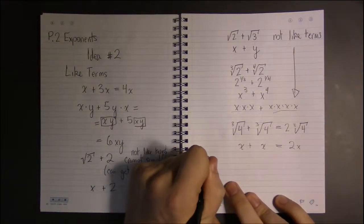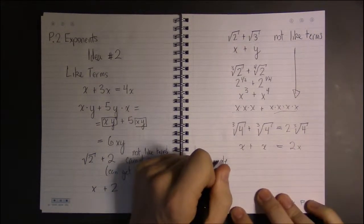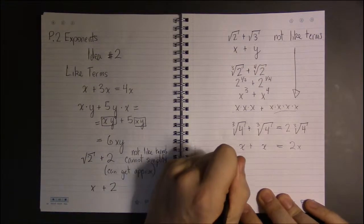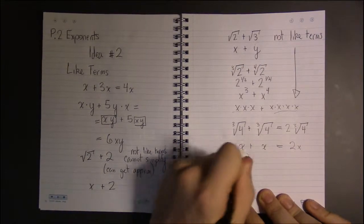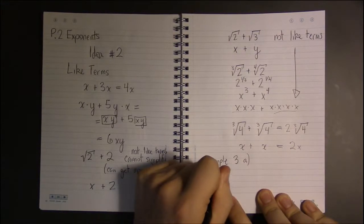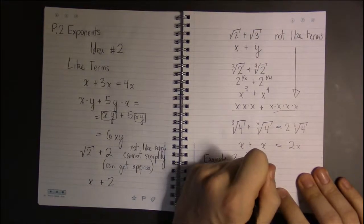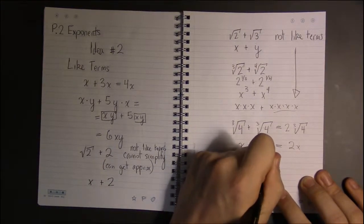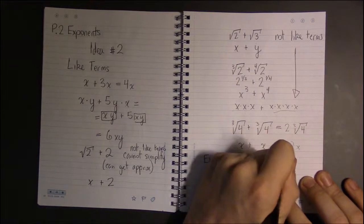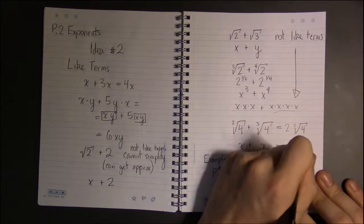Now consider example 3, 3A from P2 on page 14. Initially it looks like these two numbers aren't like terms and we're done. There's nothing left to do.